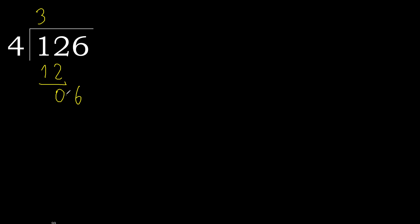Next, eliminate the 0 on this side. Bring down 6. 4 multiplied by 2 is 8, which is greater. 4 multiplied by 1 is 4, which is not greater. Subtract.